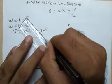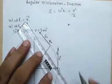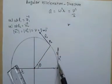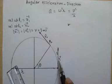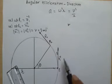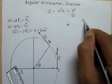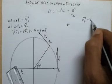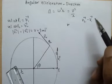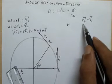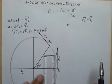I have drawn the two vectors v1 and v2. To find acceleration I need to find the change in velocity, so I'm finding v2 minus v1. If I divide this by the time taken I'll get the angular acceleration. So my focus is now to find v2 minus v1 using vectors.